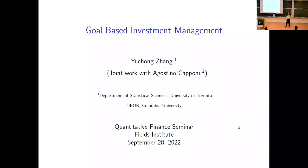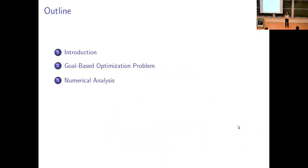I see lots of student faces, so this talk will be very accessible because the primary focus of this work is to apply it to the robo-advising industry, where the main targeting customers are general households with very little or limited finance knowledge. It's supposed to be simple and easy to understand. Here's the outline: I'll begin with a brief introduction and motivation of goal-based investing, describe our goal-based optimization problems and main results, and then present some numerical analysis and comparative statics.